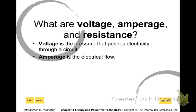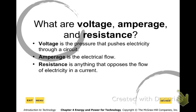Amperage is the flow — how fast is it going? Think about your thumb over the hose: if you put a lot of resistance on it, it's going to flow a lot faster, so your amperage changes based on how much resistance you put into your circuit. Resistance is anything that is going to slow the current down or slow the voltage down. So there are three things we measure when we work with electricity.